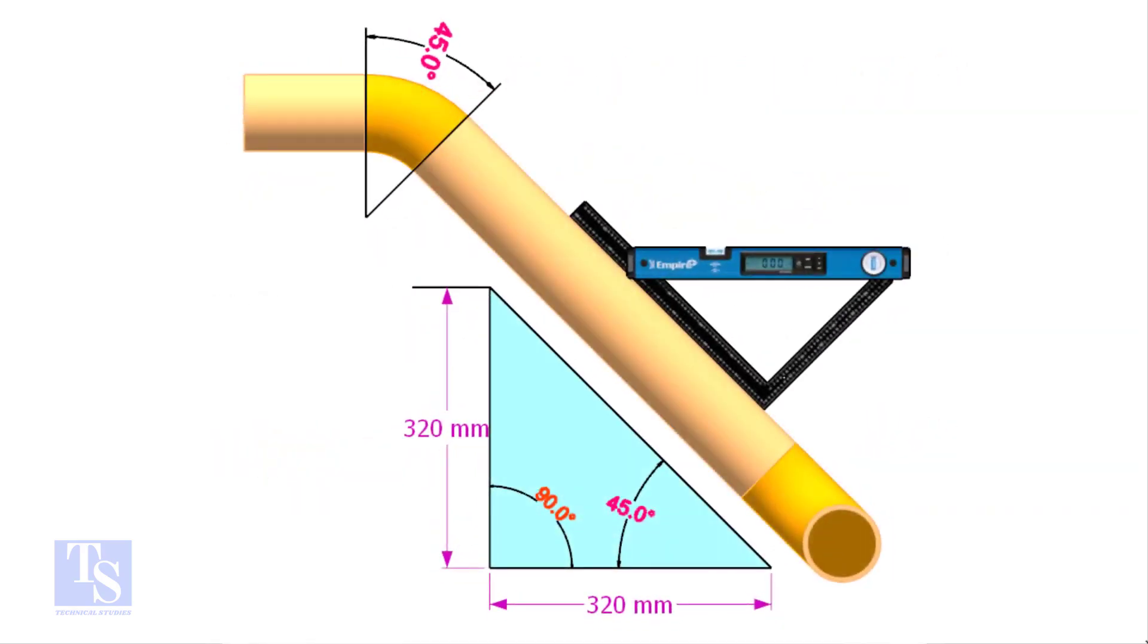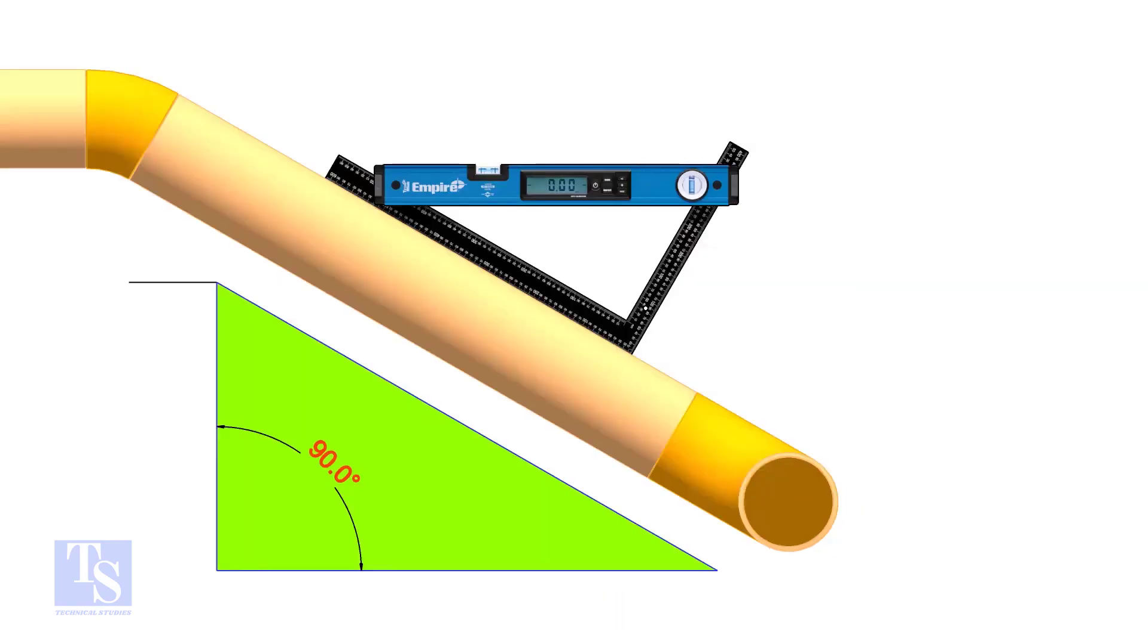So the equation proves that the line slope is 45 degrees. Let us try another example.